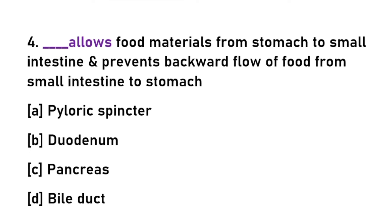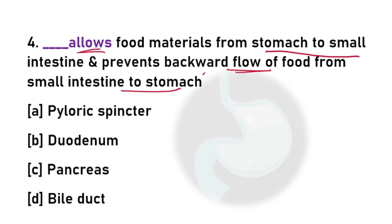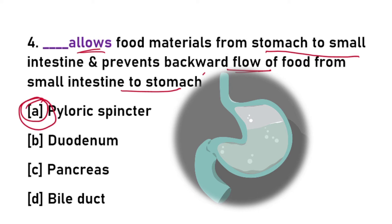Fourth question: what allows food materials from the stomach to the small intestine and prevents backward flow? The answer is the pyloric sphincter. The pyloric sphincter allows only one-way flow of food from stomach to small intestine and does not allow reverse flow from intestine to stomach.